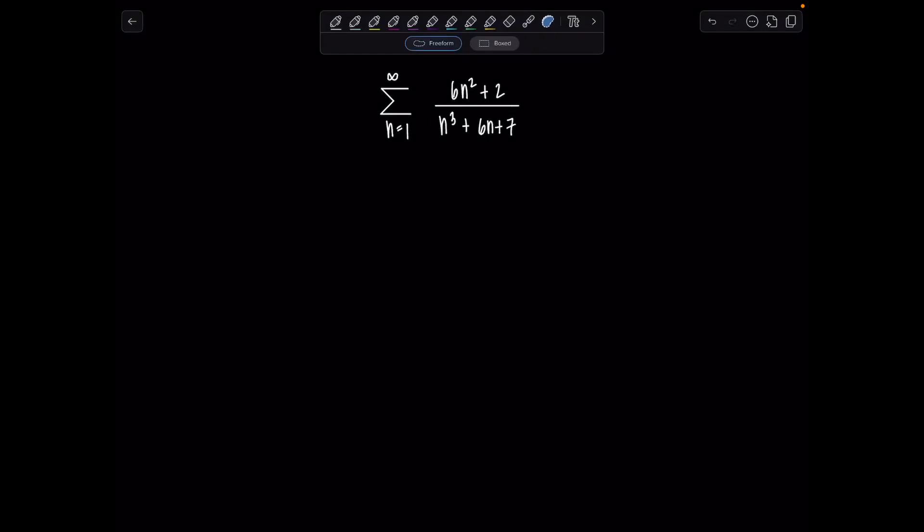Welcome to Math with Professor V. Here is your latest series of the day, and our task is to determine whether or not the infinite series converges or diverges. So we have the sum n equals 1 to infinity of 6n squared plus 2 over n cubed plus 6n plus 7.